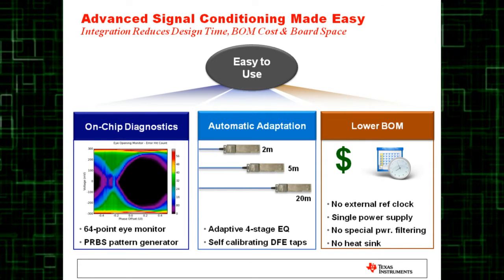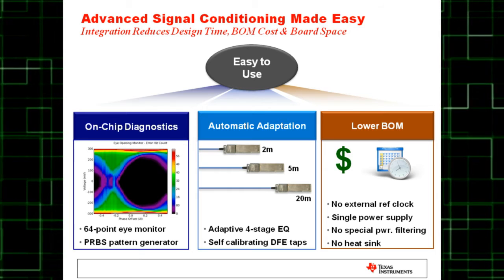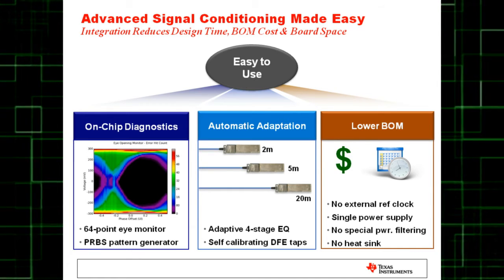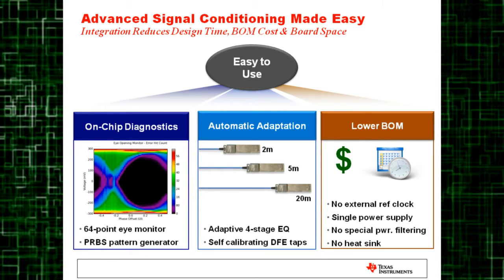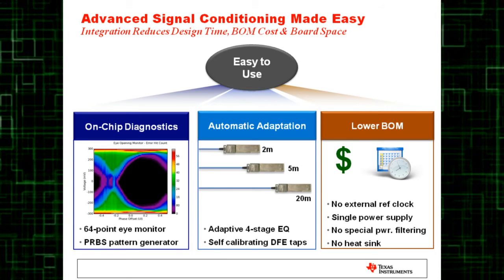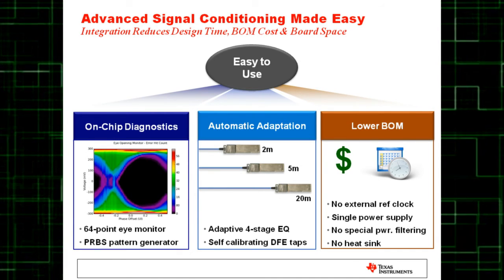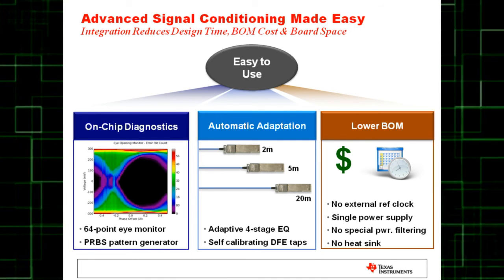The on-chip advanced diagnostics include a 64-point eye monitor with a PRBS generator. The devices also automatically adapt to varying cable lengths or media types. They enable lower system BOM cost by not requiring external reference clocks or advanced power filtering.